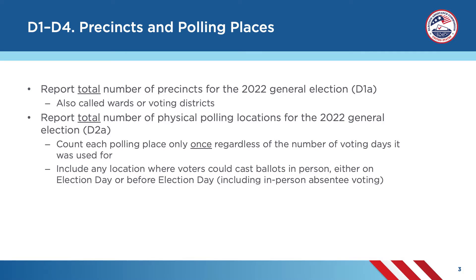Next, in question D2A, you will report the total number of physical polling locations your jurisdiction operated for the 2022 general election. In calculating this number, there are a few things you should keep in mind. First, each polling place should be counted only once. For instance, if a polling place was open during both early voting and on election day, it should be counted once in D2A. Second, any location where voters could cast ballots in person, either on election day or before election day, should be included in your response to this question. This includes locations where voters could vote using in-person absentee voting processes, if applicable in your jurisdiction.